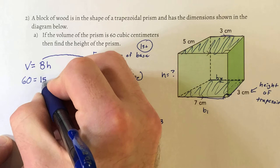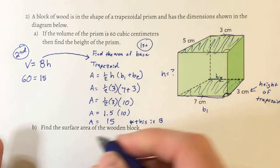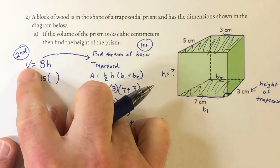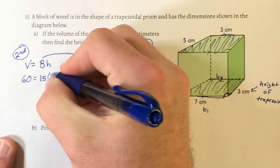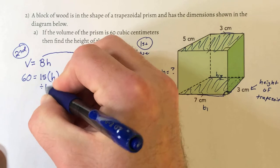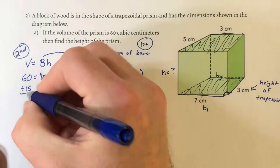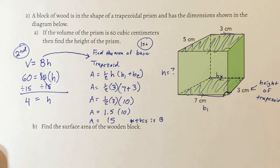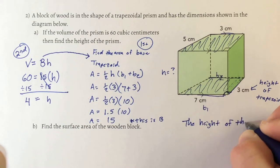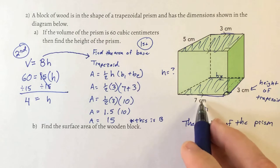Now continuing with our volume formula: 60 equals 15 times h. To solve for h, divide both sides by 15. The 15s cancel, leaving h equals 60 divided by 15, which is 4. We just found the height of the prism to be 4 centimeters. Always pay attention to labels — an inch is not the same size as a centimeter. So the first step was finding the area of the base, then using it in the volume formula to solve for the height of the prism.